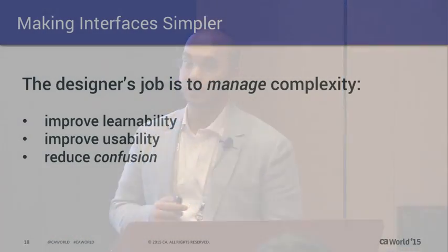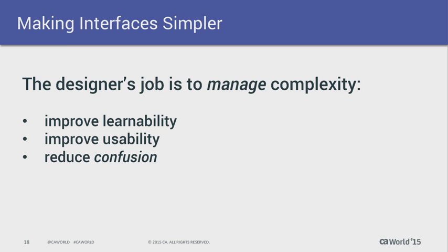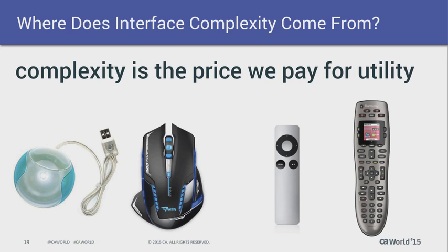So how do we make interfaces simpler if this is the goal — whether those are APIs or other kinds of interfaces? It turns out our job is not to provide things that are simple. It's to manage the complexity that's there. Complexity is always there. So we can improve learnability — make it so interfaces are easier for someone to understand. We can improve usability so they fit better — positions of buttons, groupings, colors. Ultimately, your goal as a designer isn't to reduce complexity, it's to reduce confusion.